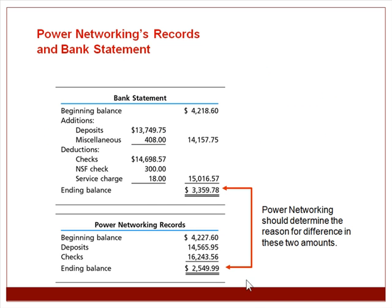Here's an example of what a bank rec looks like for a Power Networking account. You have a bank statement beginning balance and a books beginning balance — the books side being your general ledger. On the bank side you add deposits and miscellaneous items and deduct checks, NSF checks, and service charges to get the adjusted ending balance. On the books side you have the beginning balance, deposits, and checks. Notice these two sides don't equal, so you need to figure out what the problem is and reconcile them.